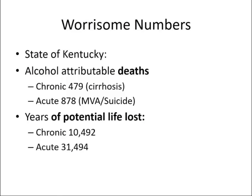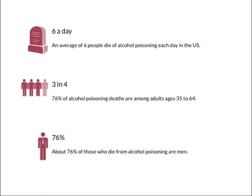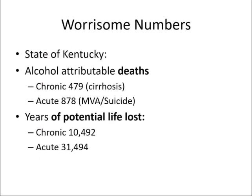Breaking this down further in Kentucky, deaths related to alcohol poisoning are split into chronic — death related to cirrhosis secondary to alcohol — and acute, where the population is much younger, related mostly to driving and suicide. The effects in terms of life-years lost are significant: acutely over 31,000 years of life lost from alcohol in this state alone.